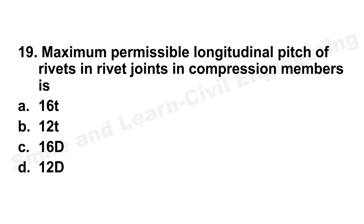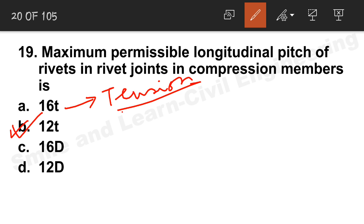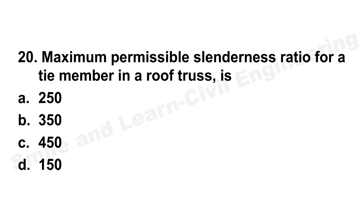Question 19: Maximum permissible longitudinal pitch of rivets in a compression member. The correct answer is option B — 12T. For tension members it is 16T. Please note both values down.